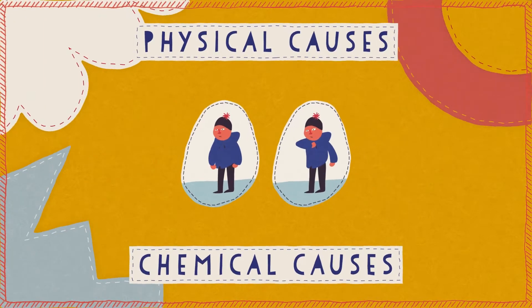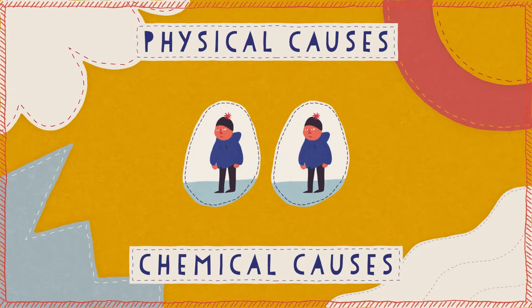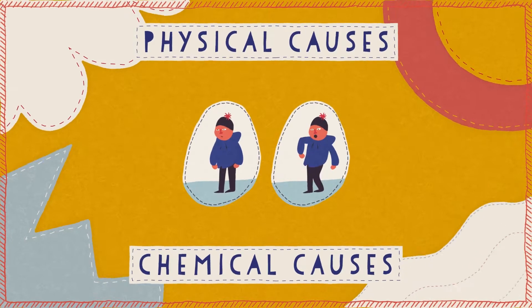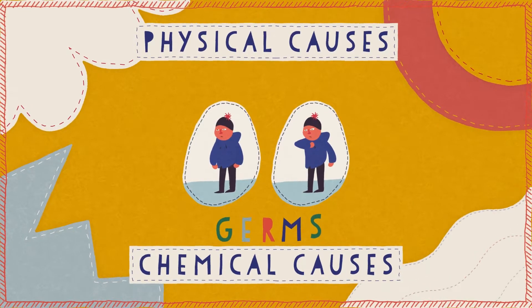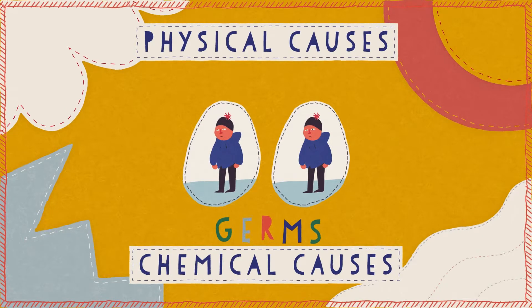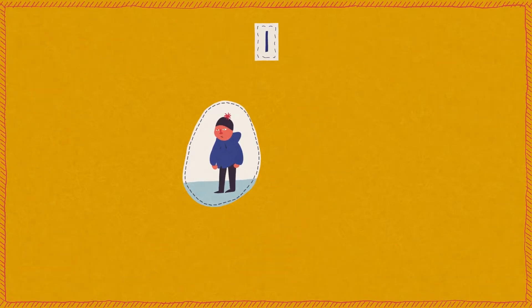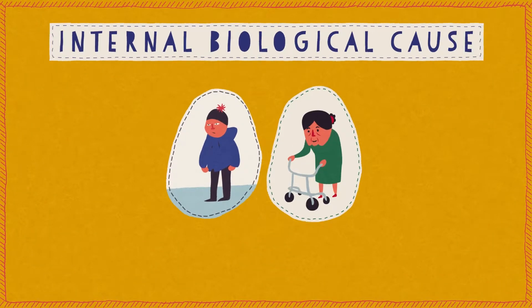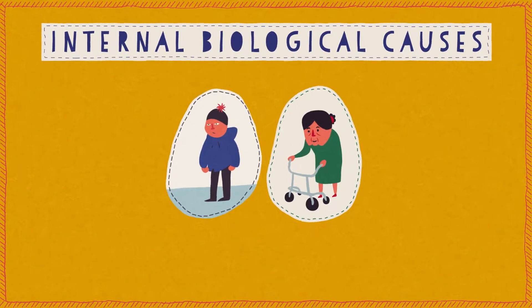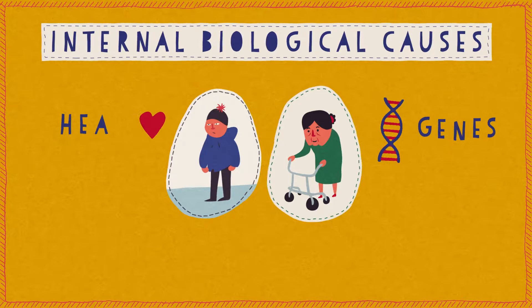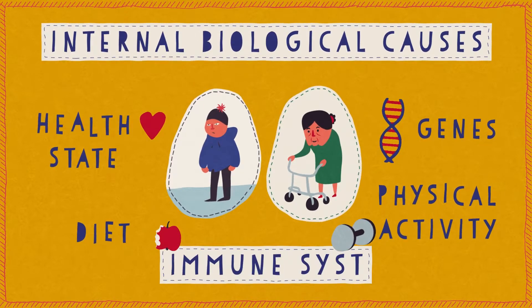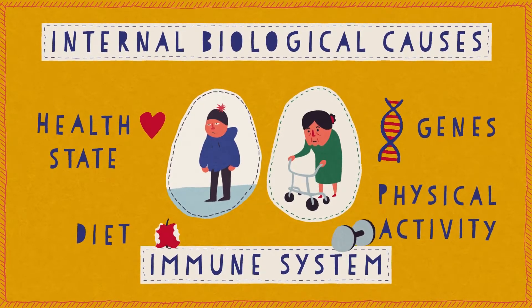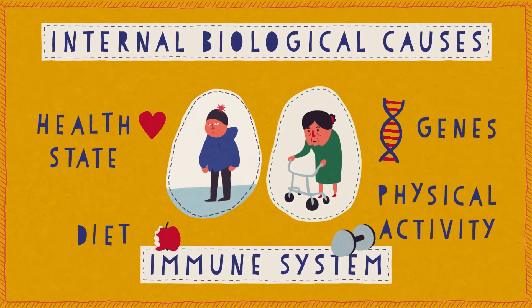Not all diseases are caused by exposure to things from outside of your body, like germs, chemical, or physical causes. There are also internal biological causes of diseases, like our genes and our body's defenses, called the immune system, which produces inflammation to protect us.